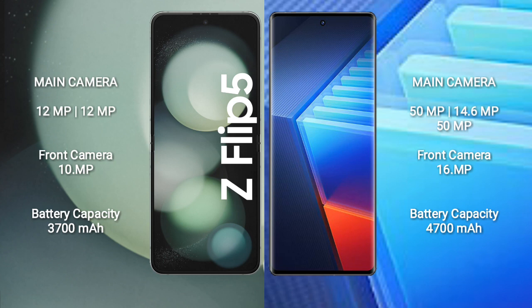The Samsung Galaxy Z Flip 5 has a rear dual camera setup — 12MP plus 12MP — and a front camera of 10MP. The Vivo IQ 10 Pro has a rear triple camera setup — 50MP plus 40MP plus 50MP — and a front camera of 16MP.